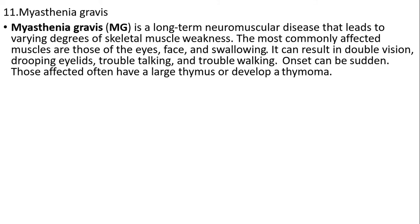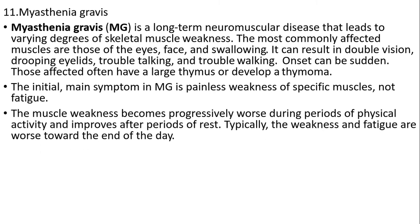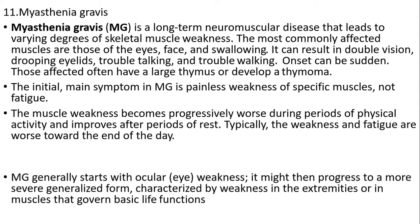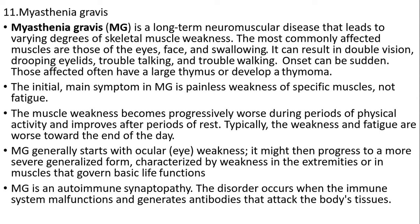Myasthenia gravis is a long-term neuromuscular disease that leads to varying degrees of skeletal muscle weakness. It commonly affects the muscles of the eyes, face, and swallowing, and can result in double vision, drooping eyelids, trouble talking, and trouble walking. Those affected may have a large thymus or develop a thymoma. The initial main symptom of MG is painless weakness of specific muscles, not fatigue. Muscle weakness becomes progressively worse during periods of physical activity and improves after rest. Typically, weakness and fatigue are worse towards the end of the day. MG generally starts with ocular weakness and may progress to a more severe generalized form with weakness in extremities or muscles governing basic life functions. MG is an autoimmune condition in which the immune system generates antibodies that attack the body's tissues.